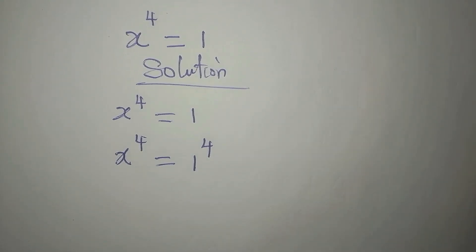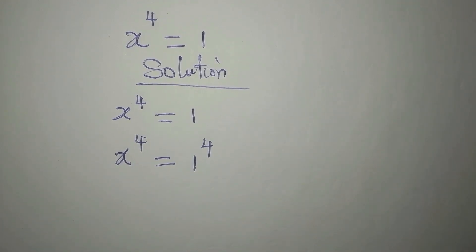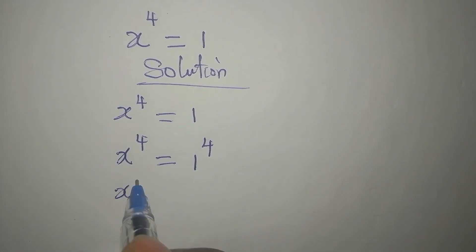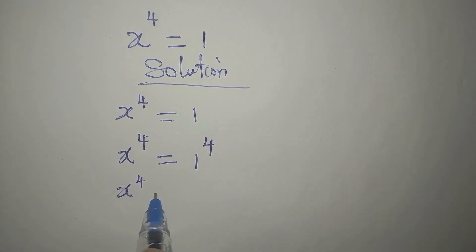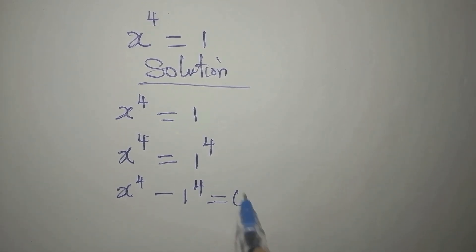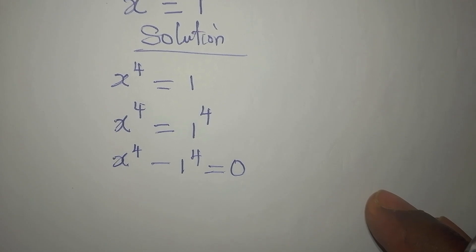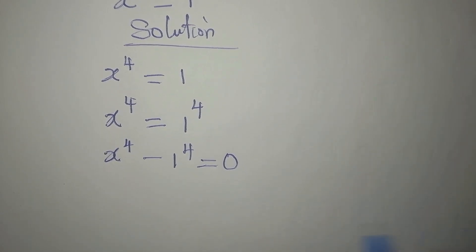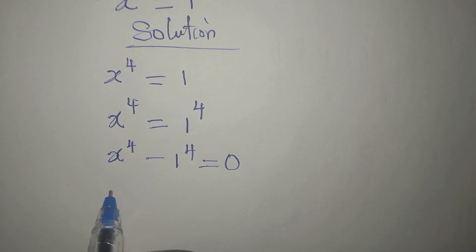Now if we equate the bases, because the powers are the same, we'll have just one solution and that won't be the complete solution. So let's take this to the left — we now have x to the power of 4 minus 1 to the power of 4 equals 0.